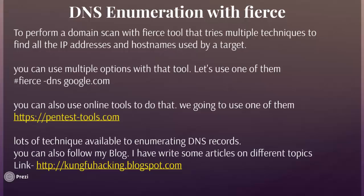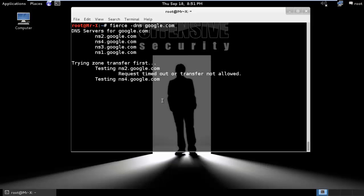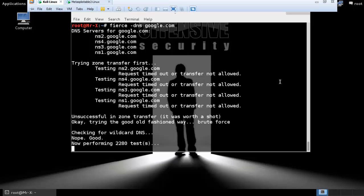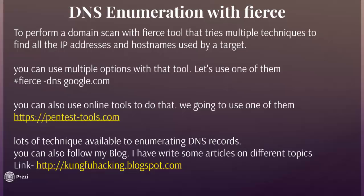DNS enumeration with Fierce: to perform a domain scan with the Fierce tool, which tries multiple techniques to find all the IP addresses and hostnames used by the target, you can use multiple options with that tool. Let's use one of them: fierce --dns and domain name google. You can see the same information we found previously. It can also perform additional tests which may take time, so we'll move to our presentation and come back.